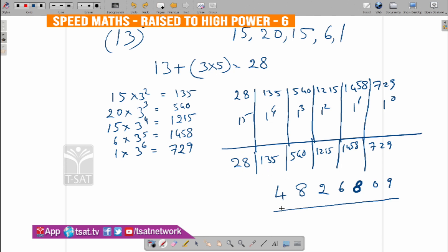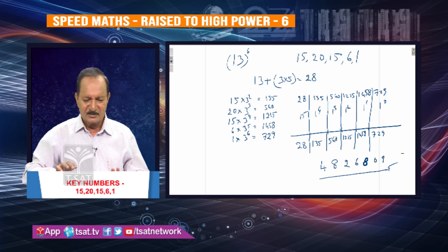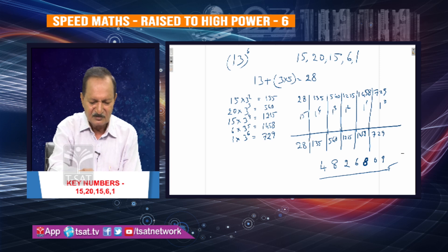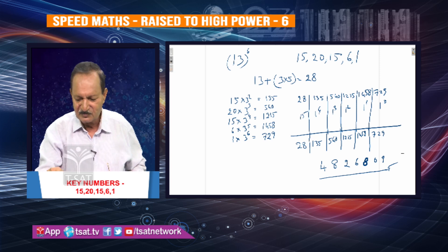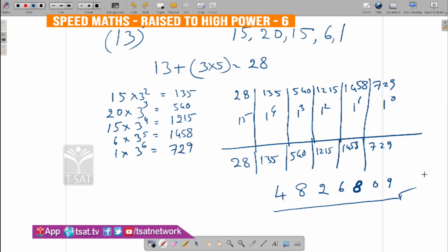So 48, 26, 59 is the answer. 4, 8, 2, 6, 8, 0, 9 is the answer. If you want to open this, what is the answer? How far is the answer? 12 by 16 — it's the key number.